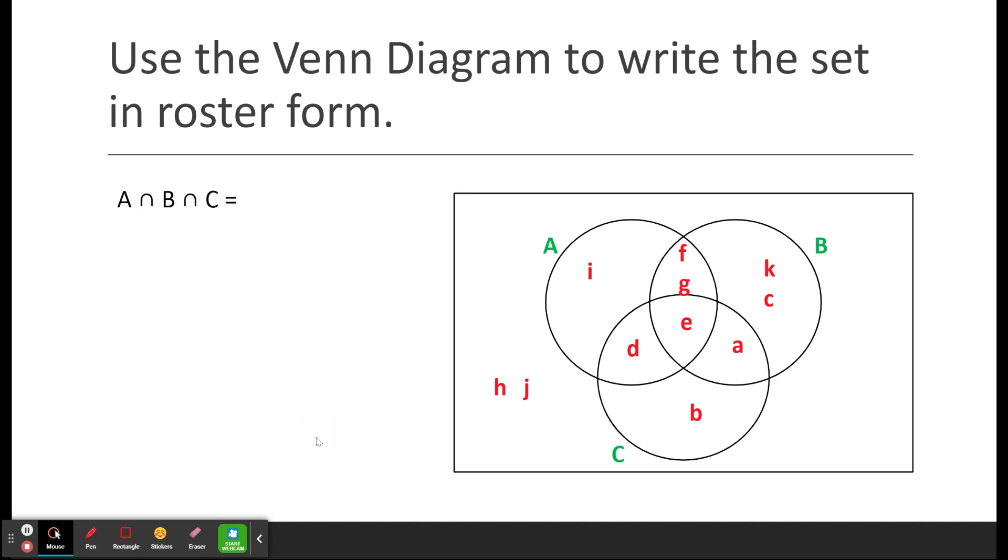Moving on to the next example. This is the intersection of A, B, and C, where they all intersect. These are kind of the easy ones if you want to call it that. A and B and C, where do they all cross over? Right there. So they cross over at that position. That means this answer is going to be the set E.